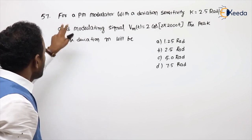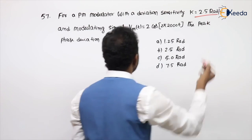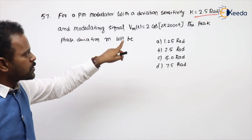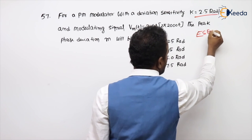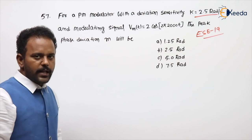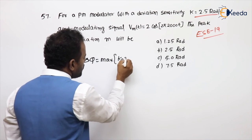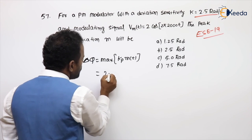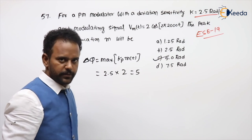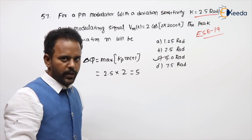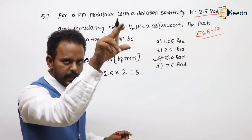See the next problem. For a PM modulator with deviation sensitivity kp = 2.5 radians per volt and modulating signal V_m(t) = 2 cos(2π × 2000t), find the peak phase deviation. This is an GATE 2019 problem. The peak phase deviation Δφ = max of kp × m(t) = kp × A_m = 2.5 × 2 = 5 radians. For a single tone: Δφ = kp·A_m, and Δf = kf·A_m.